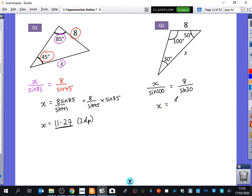So, here we get that x is equal to 8 sine 100 divided by sine 30. We can write that to the side if that's what we want to do. So, we've got 8 sine 100 divided by sine 30. And so, we get that x is equal to 15.76 to two decimal places.